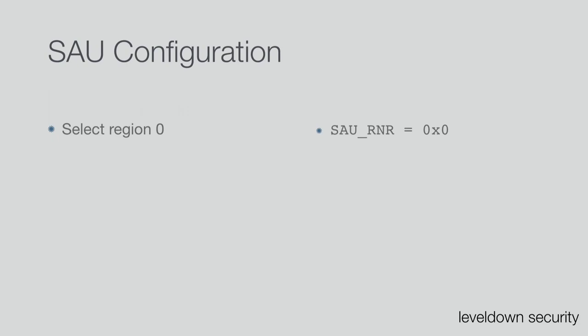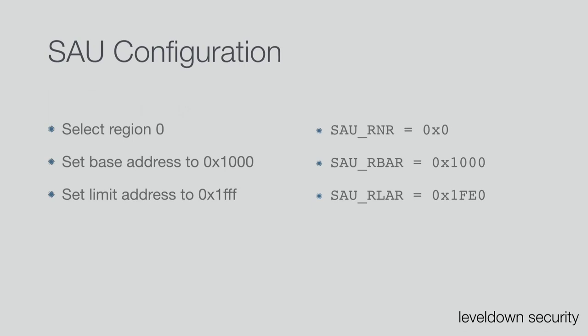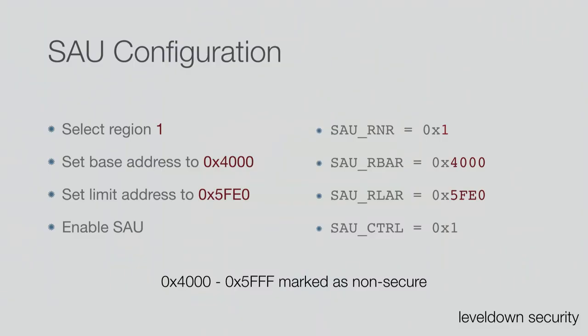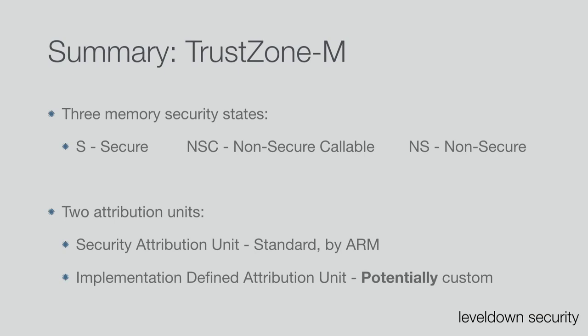For example, to set region zero: set the RNR register to 0, set the base address to 0x1000, set the limit address to 0x1FE0 (which is identical to 0x1FFF because of some other bits), then turn on the SAU — and now that memory range is marked as secure. For a second region, change RNR to 1, insert new addresses, turn on the SAU, and you have a second region from 0x4000 to 0x5FF. To summarize: three memory security states — S (secure), NSC (non-secure callable), NS (non-secure) — and two attribution units, SAU and IDAU.